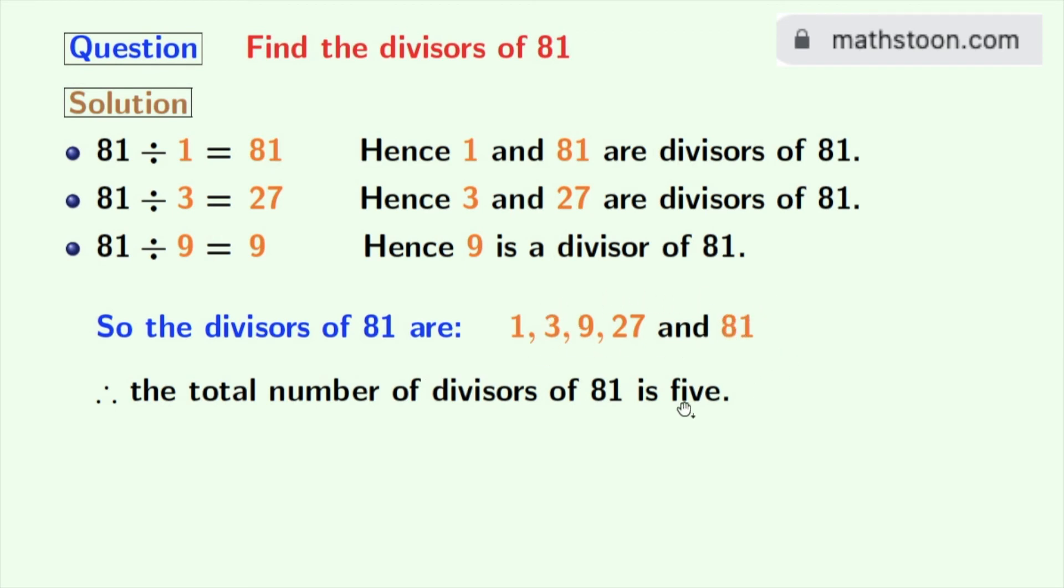Now if we look at these divisors, we can see that 3 among these numbers is a prime number because there is no number other than 1 and 3 itself which can divide 3. So we can say that the prime divisor of 81 is only 3.